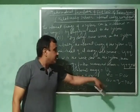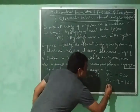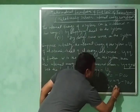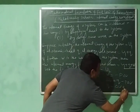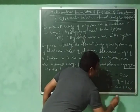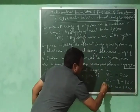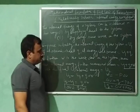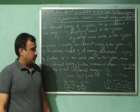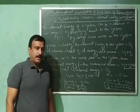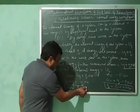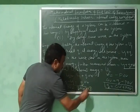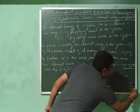Rearranging this equation gives Q equals delta U plus P delta V. So this is another form of the equation. Let us call the first equation number one and this rearranged form equation number two.